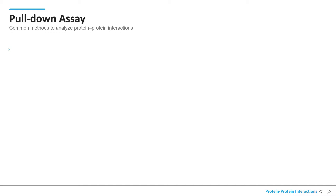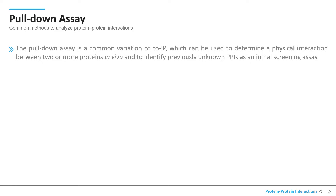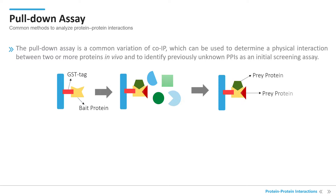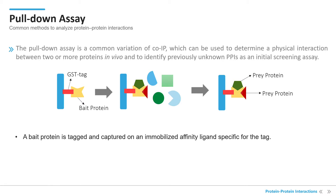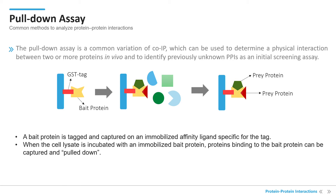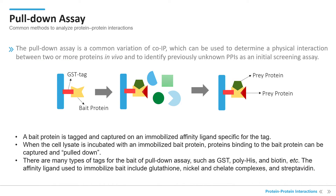The pull-down assay is a common variation of co-IP, which can be used to determine a physical interaction between two or more proteins in vitro, and to identify previously unknown protein-protein interactions as an initial screening assay. In pull-down assay, a bait protein is tagged and captured on an immobilized affinity ligand specific for the tag. When the cell lysate is incubated with an immobilized bait protein, proteins binding to the bait protein can be captured and pulled down. There are many types of tags for the bait, such as GST, poly-His, and biotin.